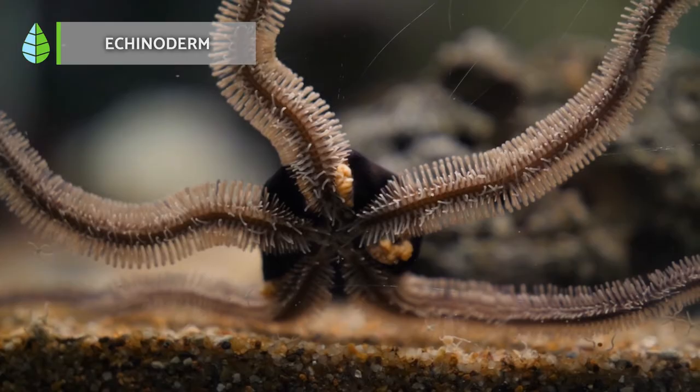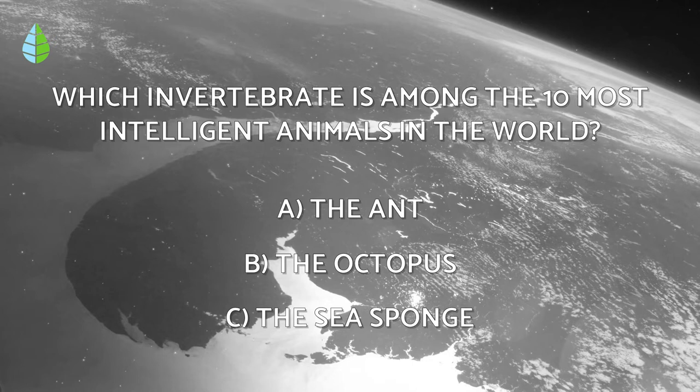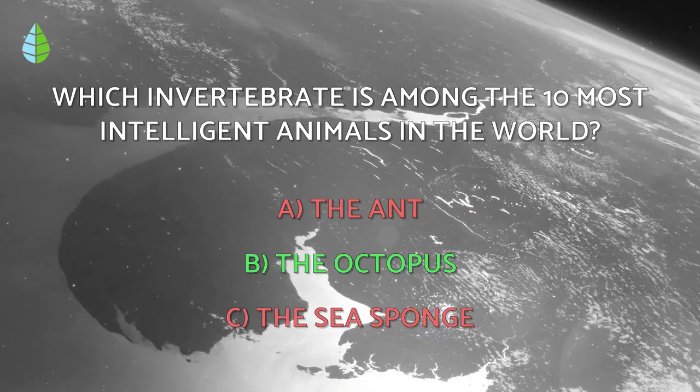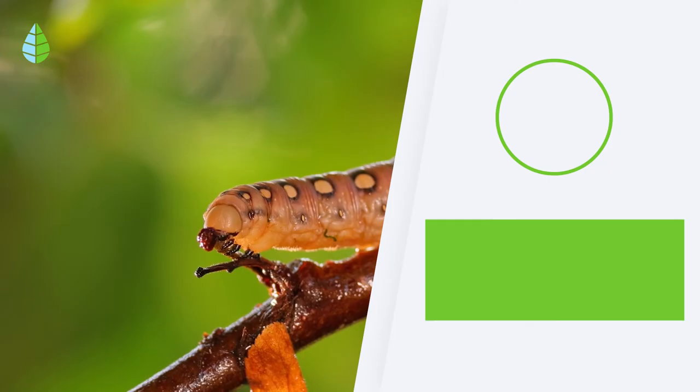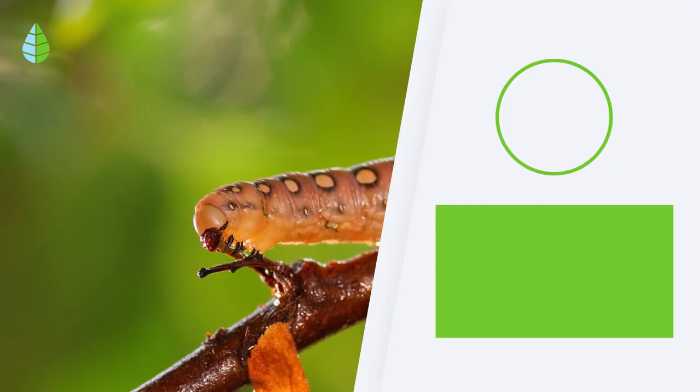Going back to the question we asked you earlier — have you thought it through? The correct answer is B: the octopus is one of the most intelligent marine animals that we know of. Let us know in the comments if you knew anything about these boneless animals. Thank you for watching and see you next time.